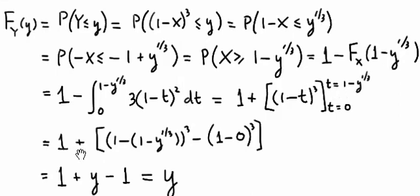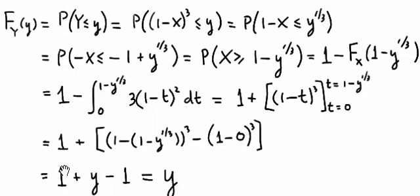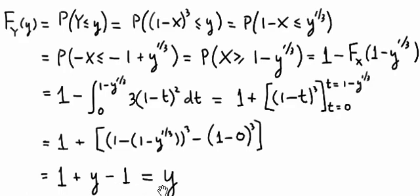So we end up getting 1 plus 1 minus — when t is equal to 1 minus y to the 1 third, we end up getting 1 minus (1 minus y to the 1 third) all cubed, and then we subtract when t is equal to 0, giving us 1 minus 0 all cubed. Simplifying: the 1s cancel each other out, that's 1 minus 1 equals 0. The negative outside of the parentheses multiplies by the negative on the y to the 1 third term, so positive y to the 1 third all cubed becomes just y, and we end up with minus 1. So the cumulative distribution function of Y is 1 plus y minus 1, which simplifies to just y.